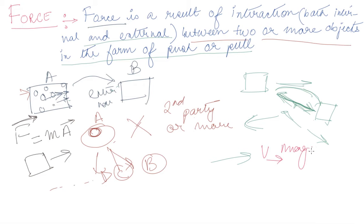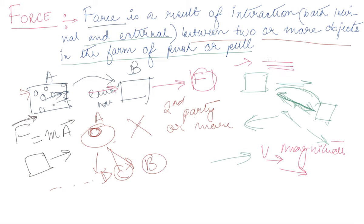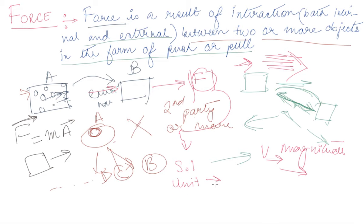A vector is something which has both a magnitude and a direction. For force, the magnitude tells us how much force is being applied — whether you are giving a gentle push or a severe push. The quantity of effort you put into pushing is the magnitude of force. The SI unit of force is Newton.